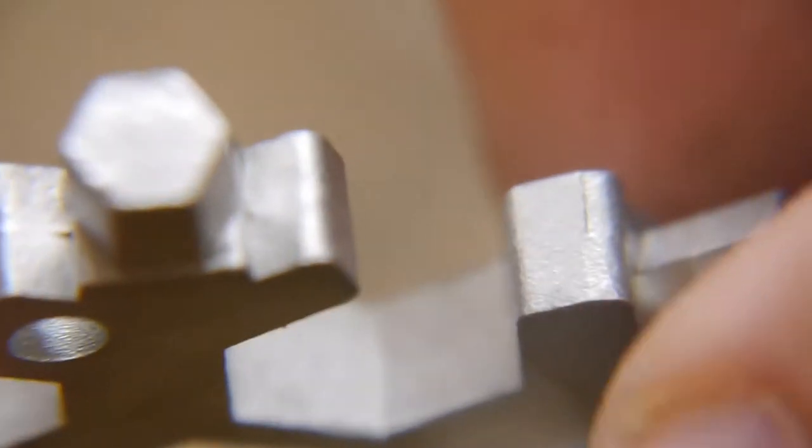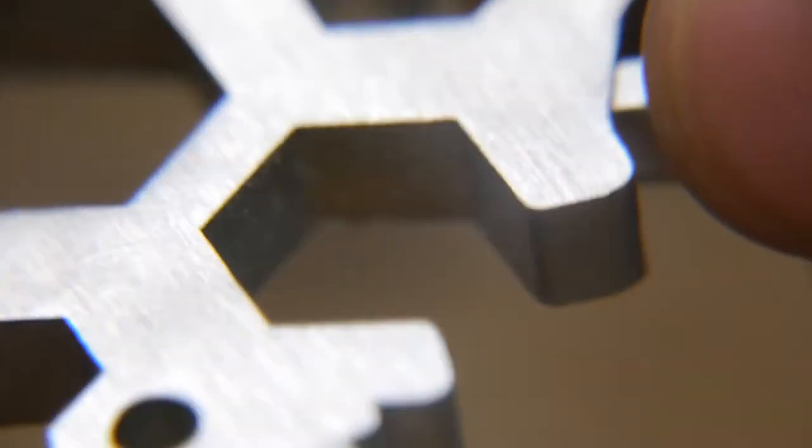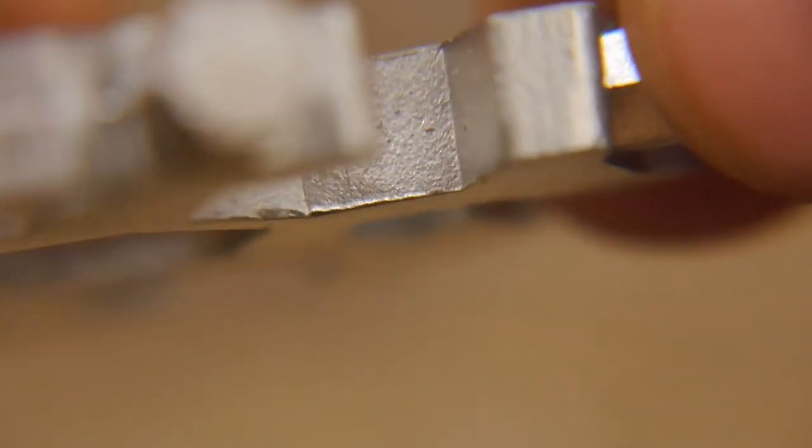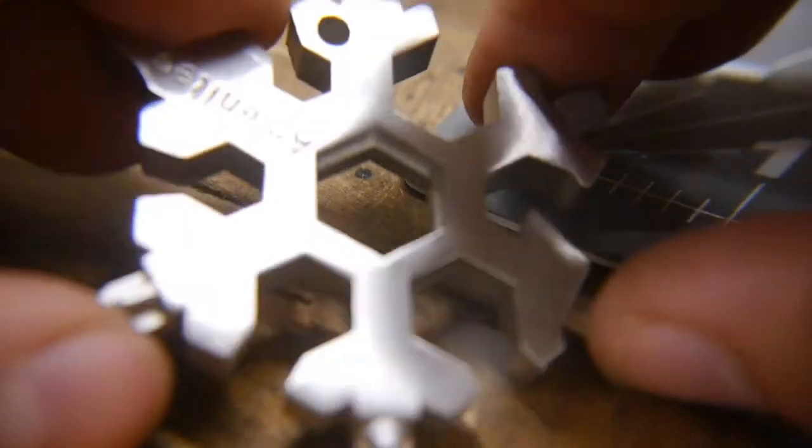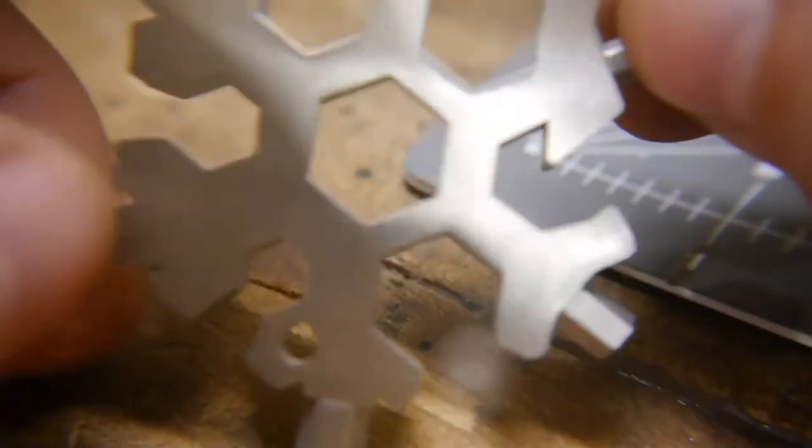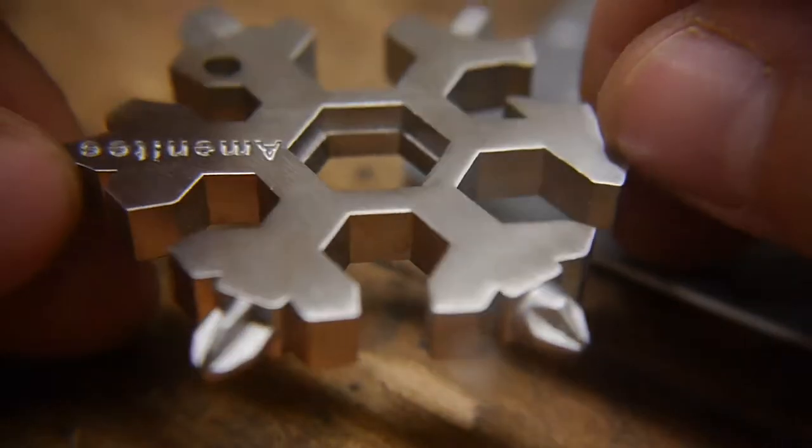So you would have a really hard time machining this, so this almost has to be a cast part. Right? Because you would leave a radius in this corner, and that corner, and that corner, unless you had an infinitely small bit. Or conversely, I suppose you could have this laser cut, and that would probably work out really well. But this obviously is not a laser cut finish. So yeah, they cast this, pull it out of the mold, and then they sand the slag off the top and bottom. And there's your finished part.